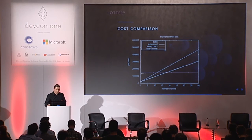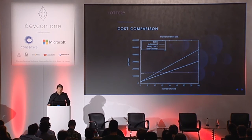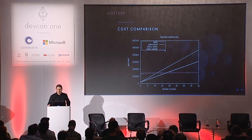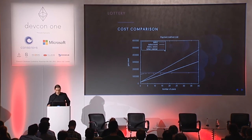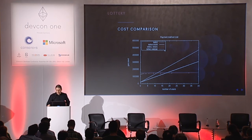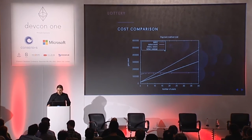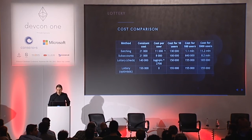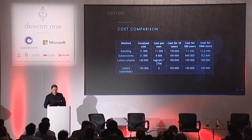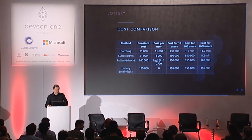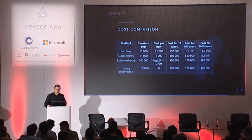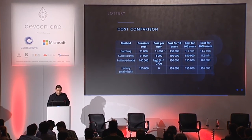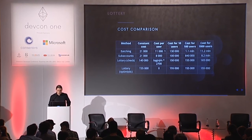The cost comparison between the presented methods shows that batching and sub-accounts grow linearly with the number of users. Lottery with Merkle check grows logarithmically; lottery-winner is a constant cost. For less than 256 users, lottery check is cheaper than lottery-winner, making it the preferable method in our setting. For 100 users, cost is 6–7 times higher for batching and sub-accounts than for lottery, and for 1,000 users it is two orders of magnitude more expensive, making batching unusable in our setting.